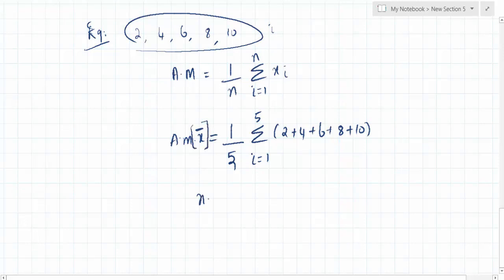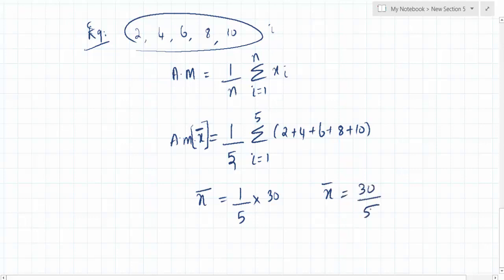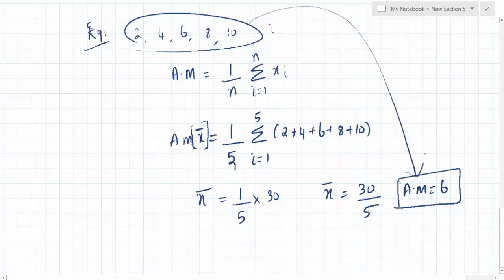So x-bar equals 1/5 times the summation of these items, which gives the value 30. Therefore x-bar equals 30 divided by 5, and the arithmetic mean is 6. This arithmetic mean of 6 denotes the average of these 5 numbers — you have 5 numbers and their average is 6. That's what we find with arithmetic mean. There is also a shortcut method for finding arithmetic mean, which will be covered in the next session.